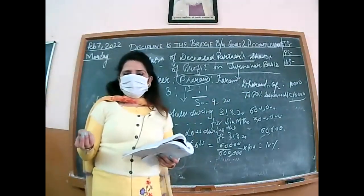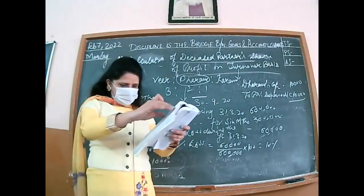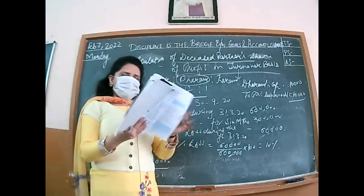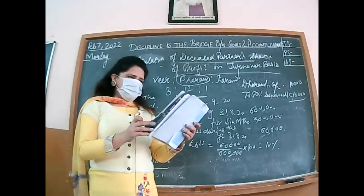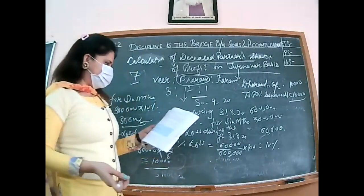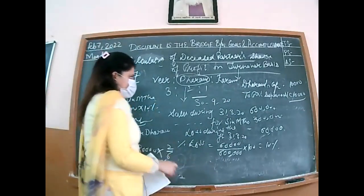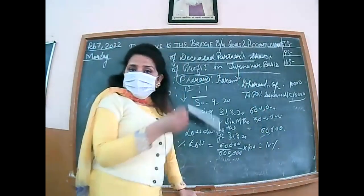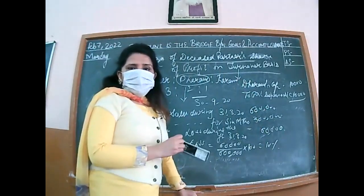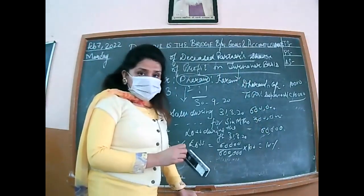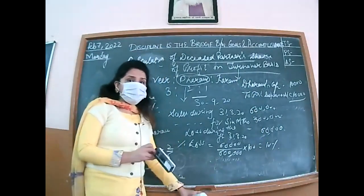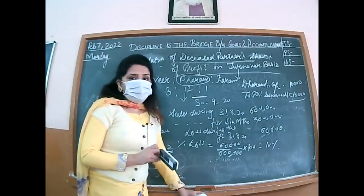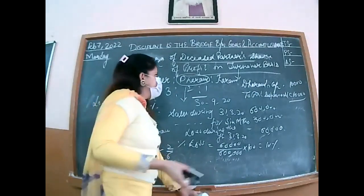Next topic: goodwill. I will discuss only illustration 10 with you, because we have already covered the same topic in retirement. Since in illustration 10 it is combined — asking both share of profit and share of goodwill — we proceed. The gaining partners are to be debited and the retiring or deceased partner is to be credited, same as at the time of retirement.